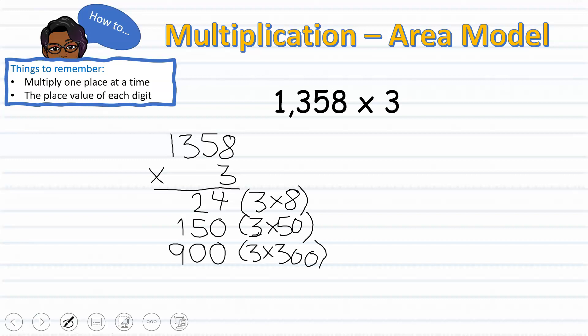Moving on to the hundreds place, we multiply 3 times 300, which gives us 900. Finally, we multiply the thousands place. 3 times the 1 in the thousands place gives us 3000. Now we are ready to add.